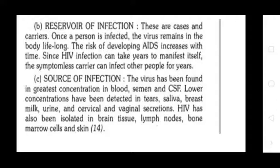Source of infection: The virus has been found in greatest concentrations in blood, semen, and cerebrospinal fluid (CSF). Lower concentrations have been detected in tears, saliva, breast milk, urine, and cervical and vaginal secretions. HIV has also been isolated from brain tissue, lymph nodes, bone marrow cells, and skin.